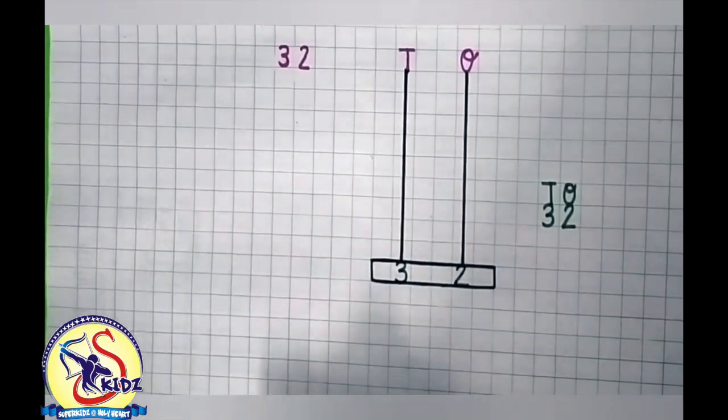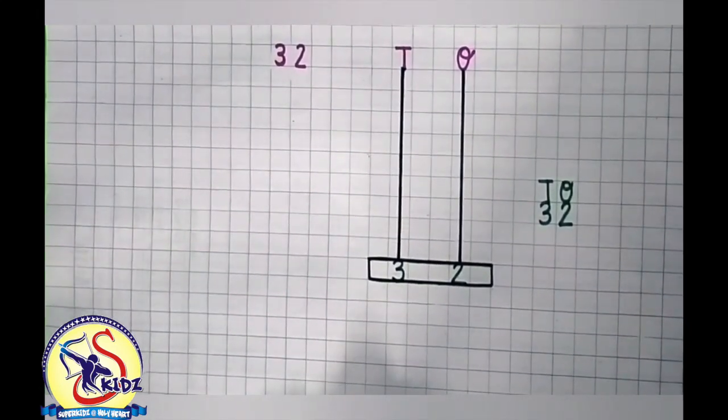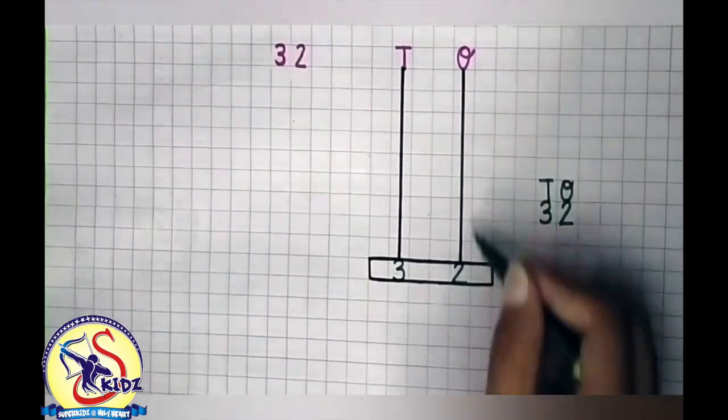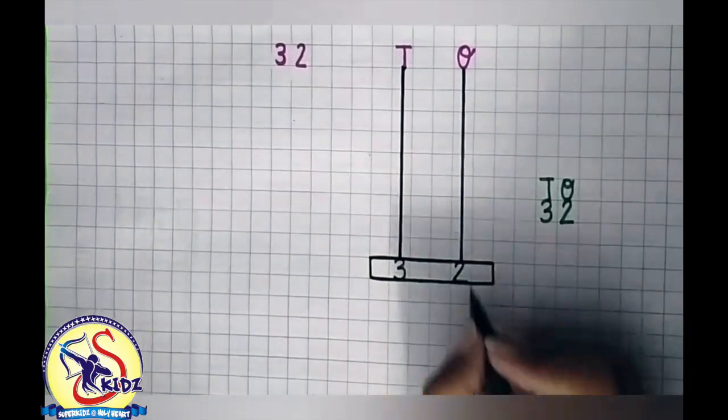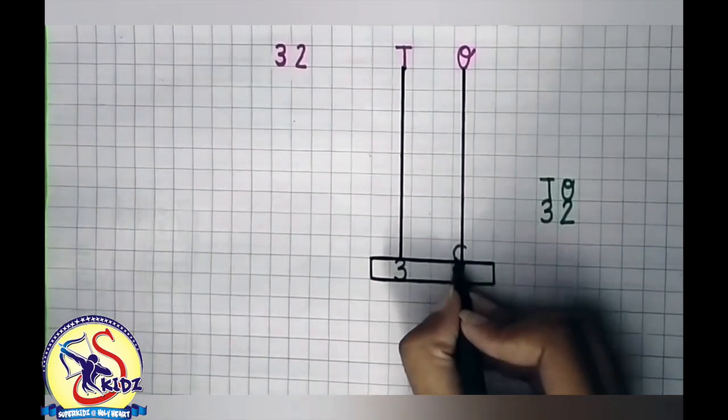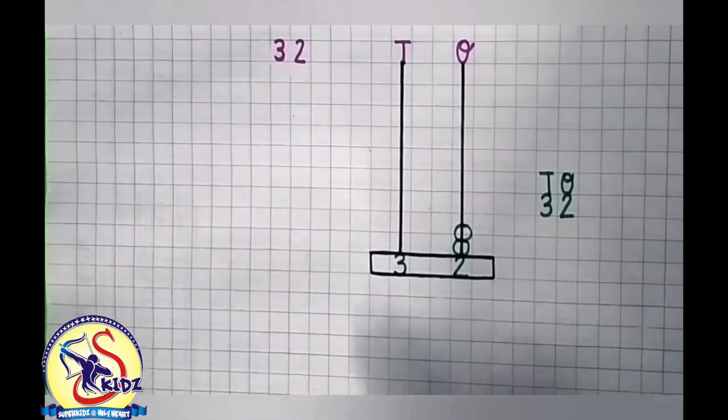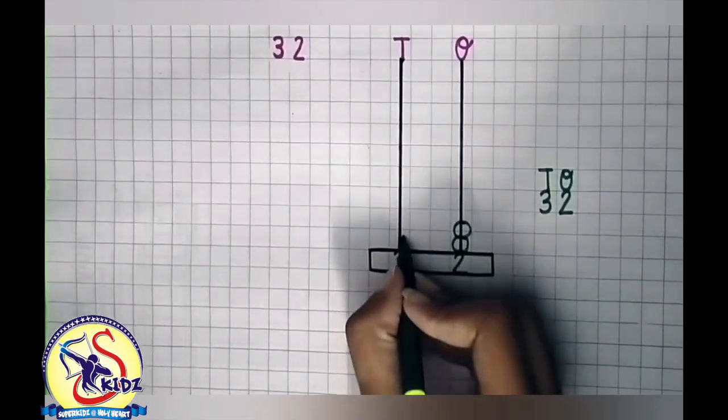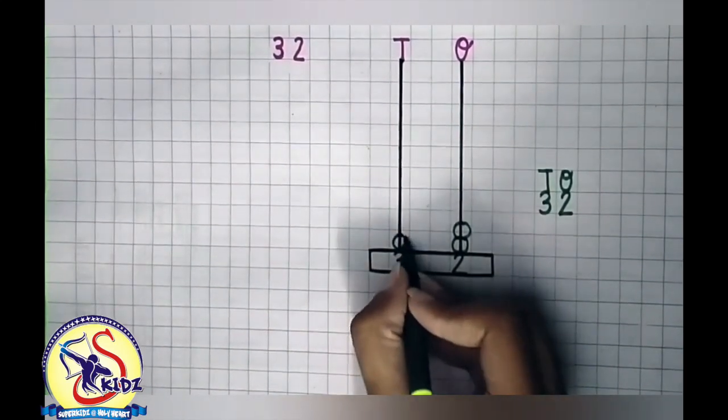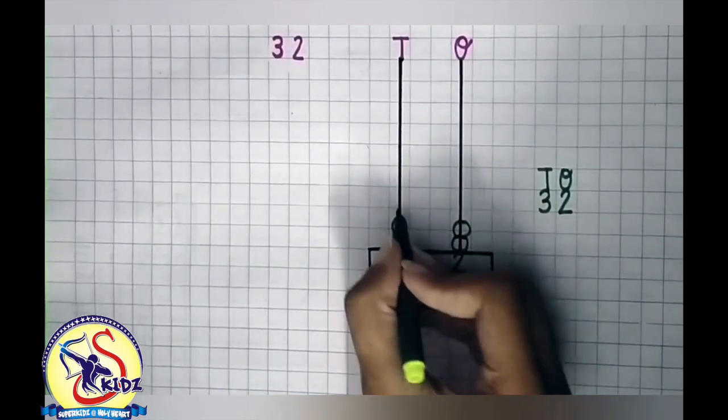Now we will make 2 beads on the Abacus. Let's see: 1, 2. Now we will make 3 beads on the Abacus. Let's see: 1, 2, 3.